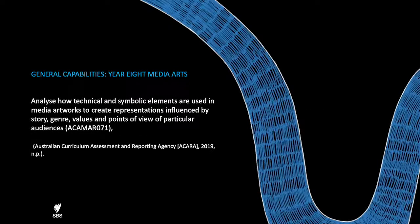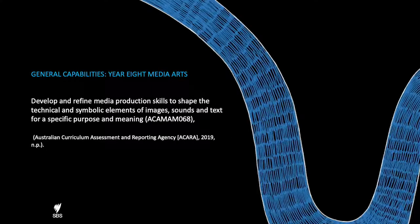This text was selected to give students the opportunity to learn how to analyse technical and symbolic elements that are used in media artworks to create representations, and also to have the opportunity to develop and refine their media production skills in order to shape technical and symbolic elements in text for a specific purpose.